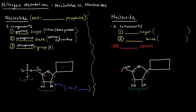Here we have a nitrogenous base attached to a pentose sugar, which is a five-carbon sugar. The five carbons are labeled one prime, two prime, three prime, four prime, five prime. This can be ribose or deoxyribose — what determines that is the two prime position. A two prime OH would be ribose, or if it was just a hydrogen instead of an OH group, then we would have deoxyribose. What goes on at that two prime carbon determines whether it's ribose or deoxyribose.